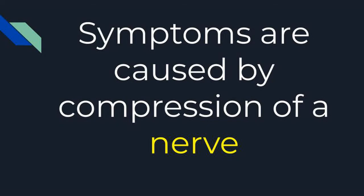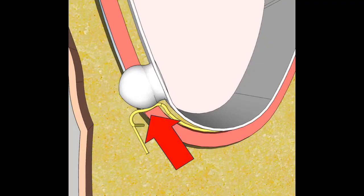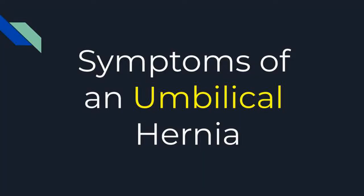Symptoms from hernias are often caused by compression of nerves. The nerves are the structures that go along through the space with the hernia, and by compression on the nerve against the edge of the muscle, pain can be caused.